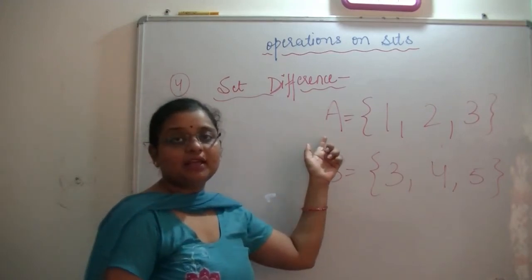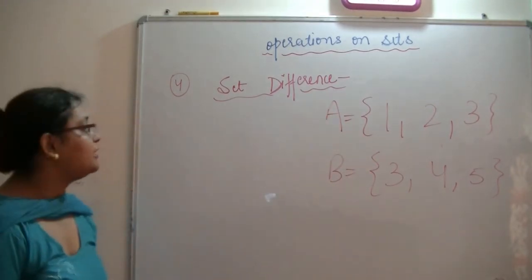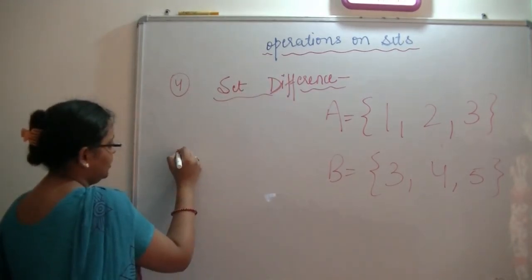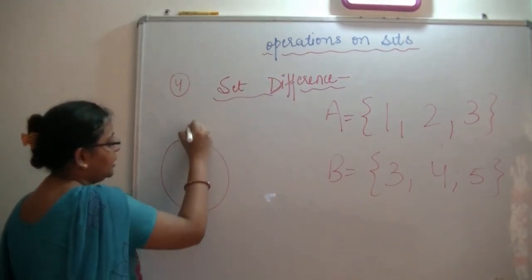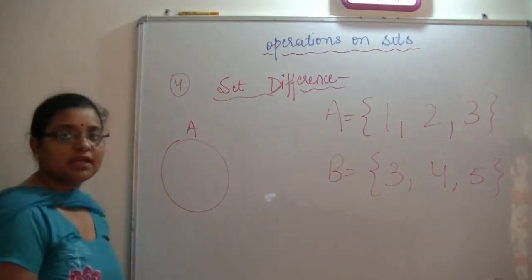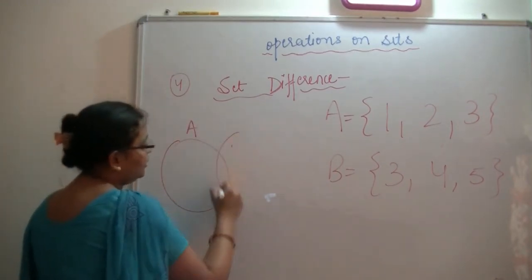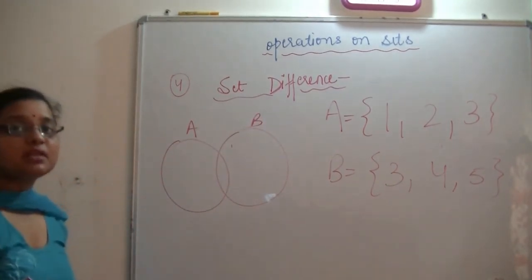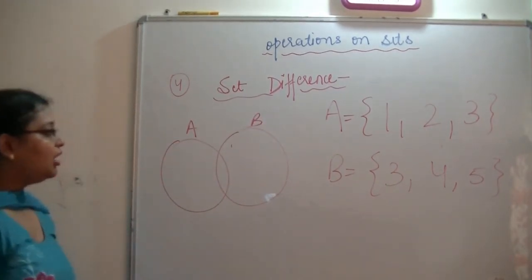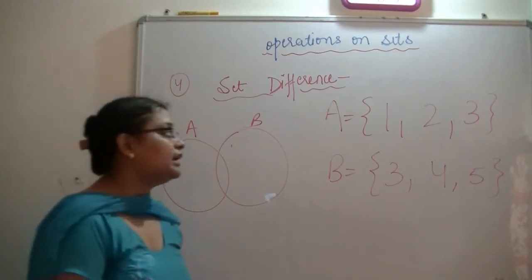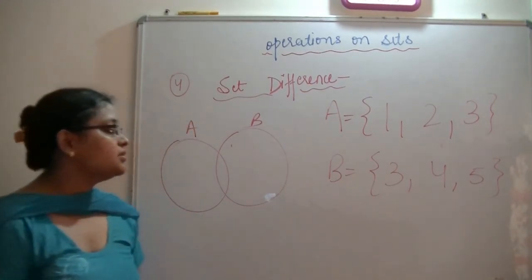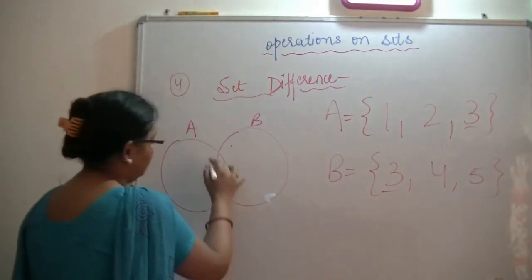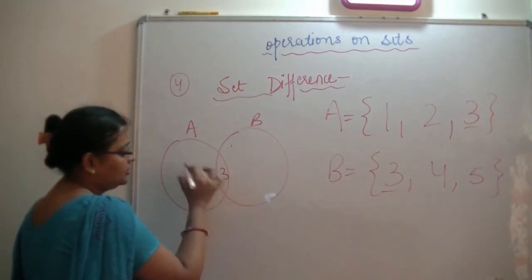Set A is {1, 2, 3} and set B is {3, 4, 5}. To visualize this, I have a Venn diagram with two overlapping circles — one representing A and one representing B. We can see there is a common element: 3 is in the overlapping portion. The remaining elements of A are 1 and 2, and the remaining elements of B are 4 and 5.